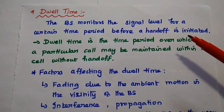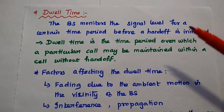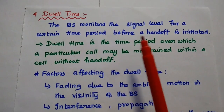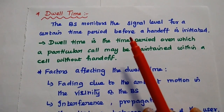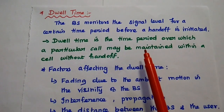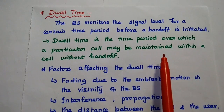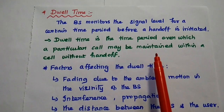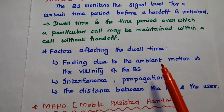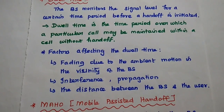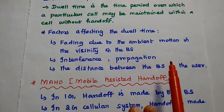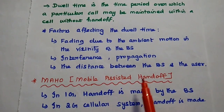T12 time is an important factor in the handoff process. When the user is moving in a cell, the base station continuously monitors the signal level for a certain time period before a handoff is initiated — up to the minimum acceptable value. Once it reaches the minimum acceptable value, the handoff process starts. T12 time is the time period over which a call may be maintained within a cell without handoff. Factors affecting T12 time include fading, interference, propagation, and the distance between the base station and the user.